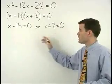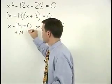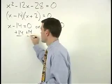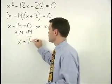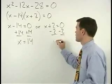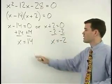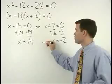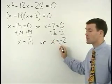Solving for x in each equation, add 14 to both sides on the left and x equals 14. Subtract 2 from both sides on the right, x equals negative 2. So x equals 14 or x equals negative 2.